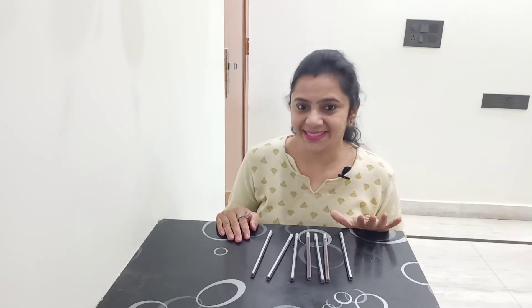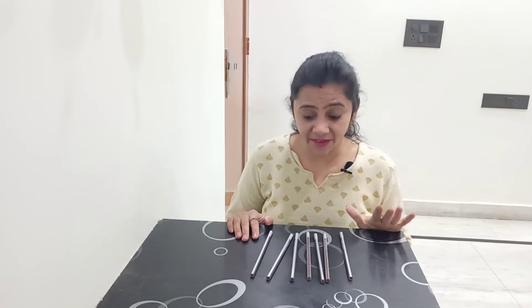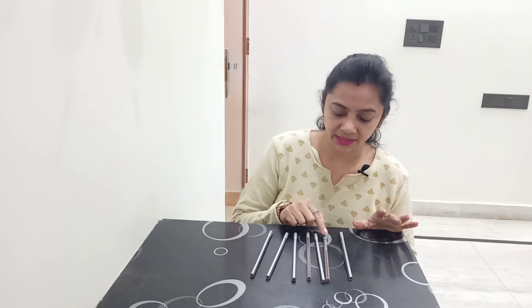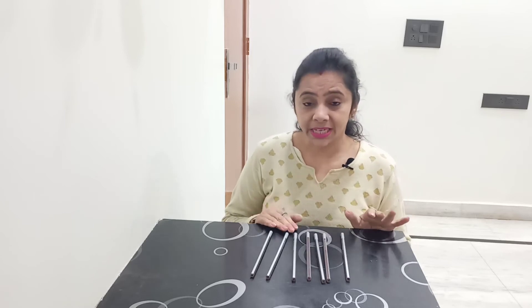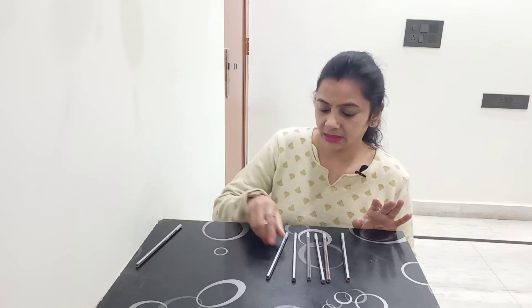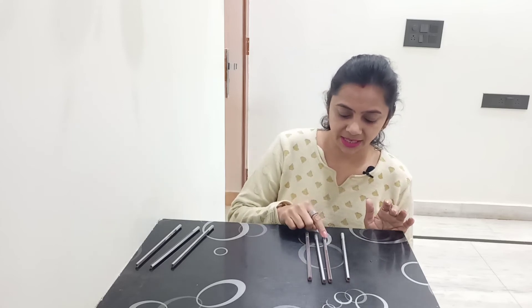Let's learn one more example. I have seven pencils — one, two, three, four, five, six, seven. Three pencils take away — one, two, three. How many pencils are left with me? Let's see: one, two, three, four — four pencils. Seven minus three is equal to four.